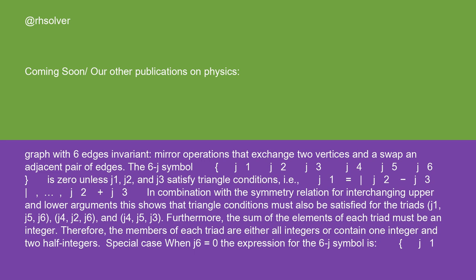J1, J2, and J3 satisfy triangle conditions, i.e., J1 is between J2 minus J3 and J2 plus J3. In combination with the symmetry relation for interchanging upper and lower arguments, this shows that triangle conditions must also be satisfied for the triads J1, J5, J6; J4, J2, J6; and J4, J5, J3. Furthermore, the sum of the elements of each triad must be an integer. Therefore, the members of each triad are either all integers or contain one integer and two half-integers.